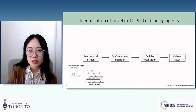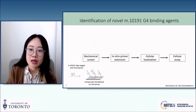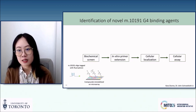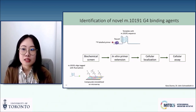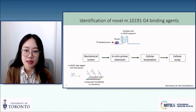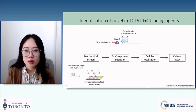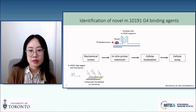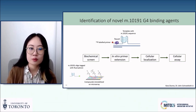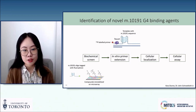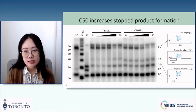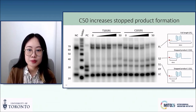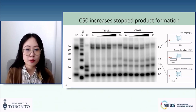Next, we use an in vitro primer extension assay to characterize the candidate compound's ability to inhibit polymerase processivity. We mix the 10191 template with T32-labeled primers, then add intact polymerase to allow for extension. Extension will result in two types of products: the full-length product, where the polymerase was able to replicate past the G4, and a truncated stop product, where the polymerase is stopped by the G4 structure. This is an extension assay from a candidate compound from our previous screen. We call this compound C50, and it can potently inhibit polymerase processivity through the 10191 G4.